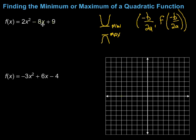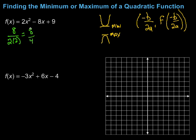For this first one, I need to find the vertex, starting with the x-coordinate. That's negative b over 2a. Here my b is negative 8, so negative of negative 8 is positive 8, over 2 times a, which is 2. So 2 times 2 gives us 4. Then 8 divided by 4 is just 2. So that is my x-coordinate.